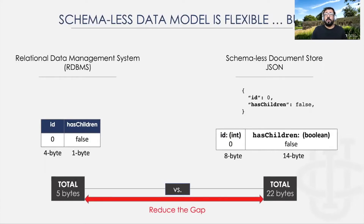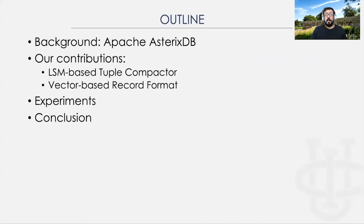So, is there a way where we can reduce the gap between the relational model and the JSON model in terms of storage overhead? The outline of this talk is structured as follows: first, we give an overview of our target system, Apache S6DB. Next, we zoom in on our contributions, giving an overview of the LSM-based tuple-compaction framework, and then briefly cover the compaction-friendly vector-based record format. Then we show the results of our experiments, and finally, the conclusion.